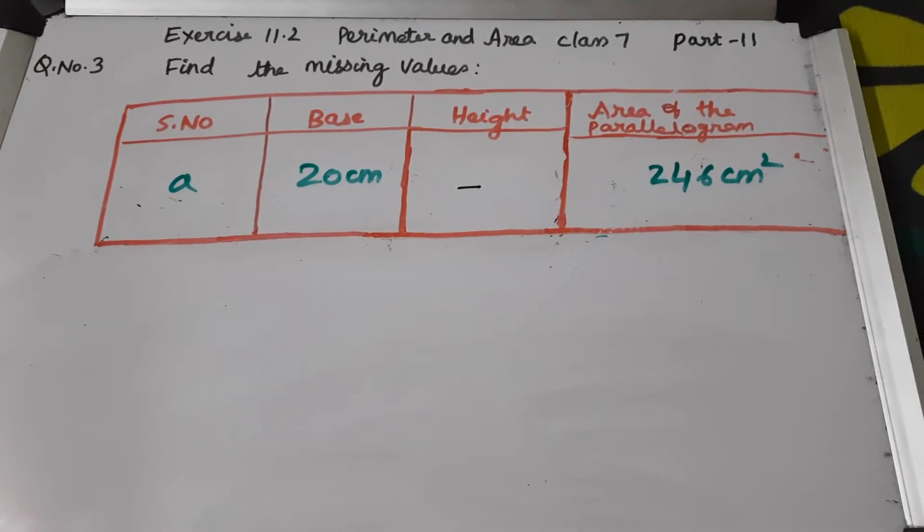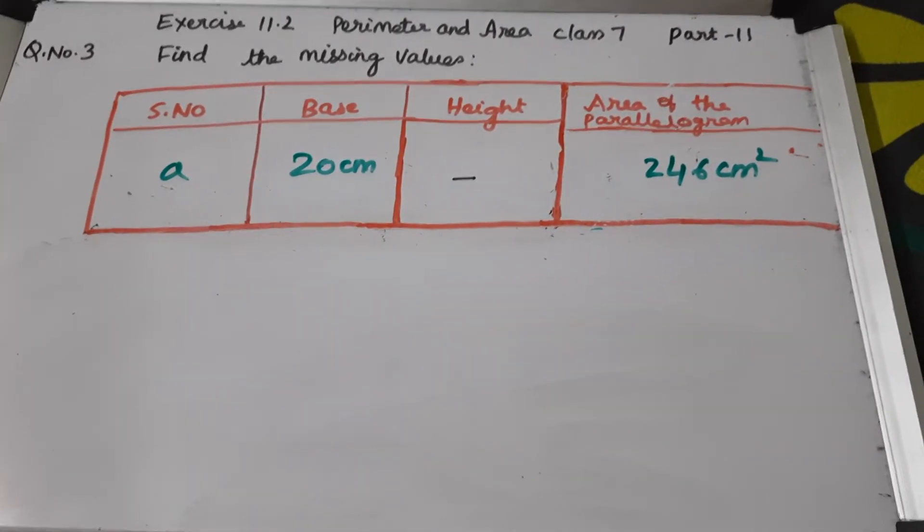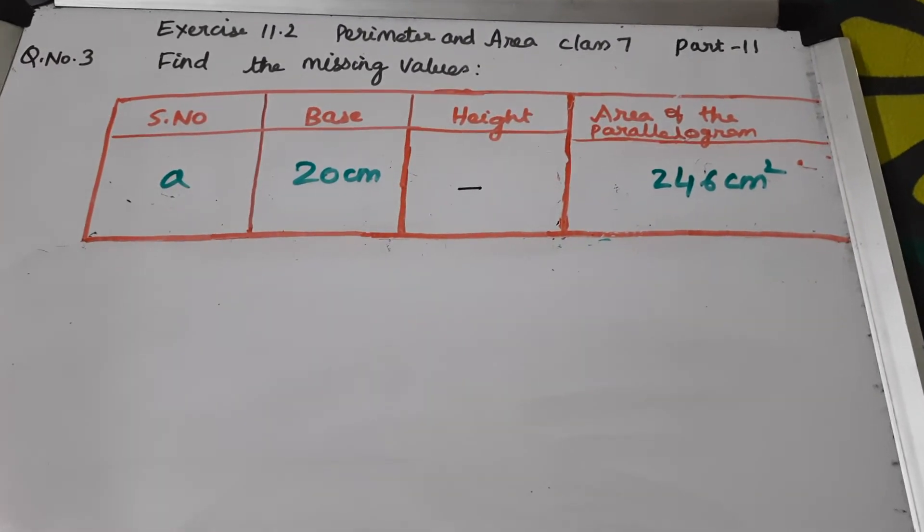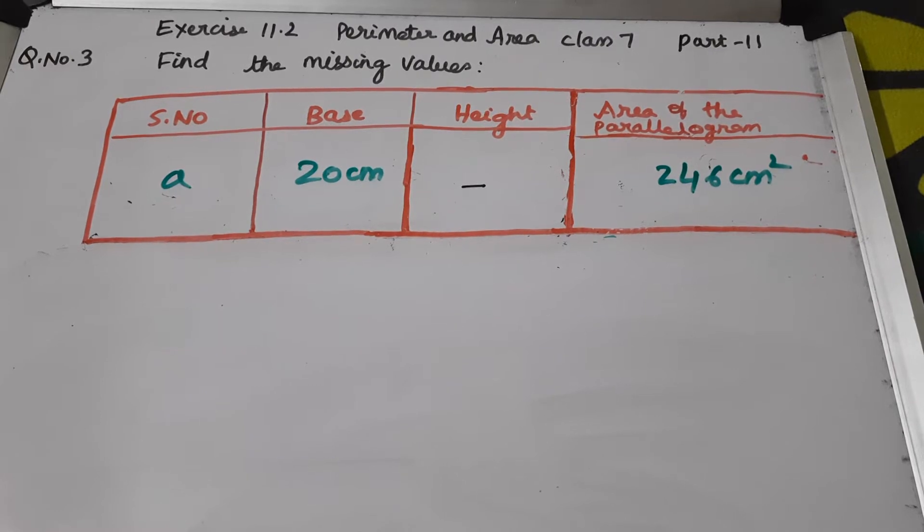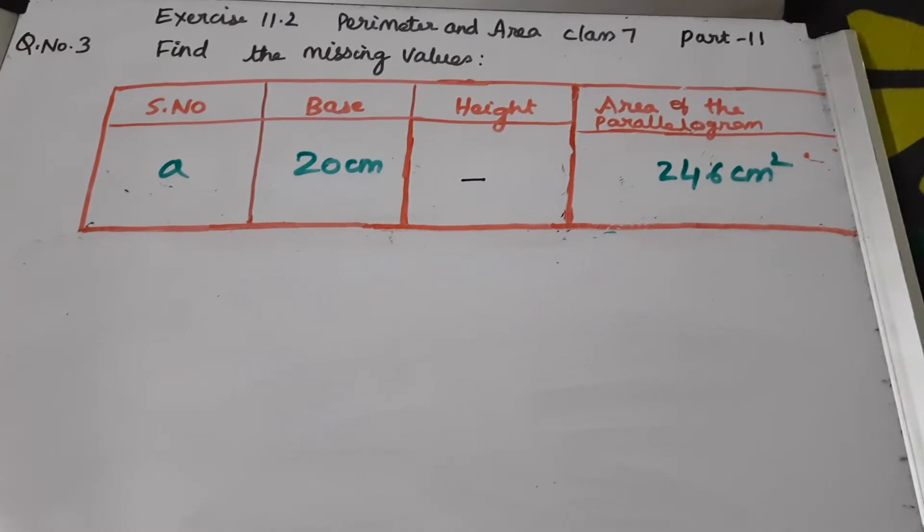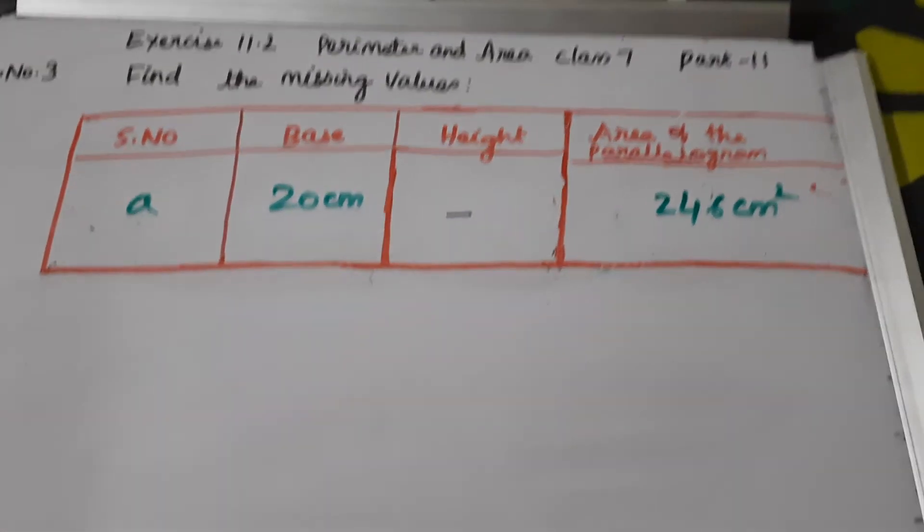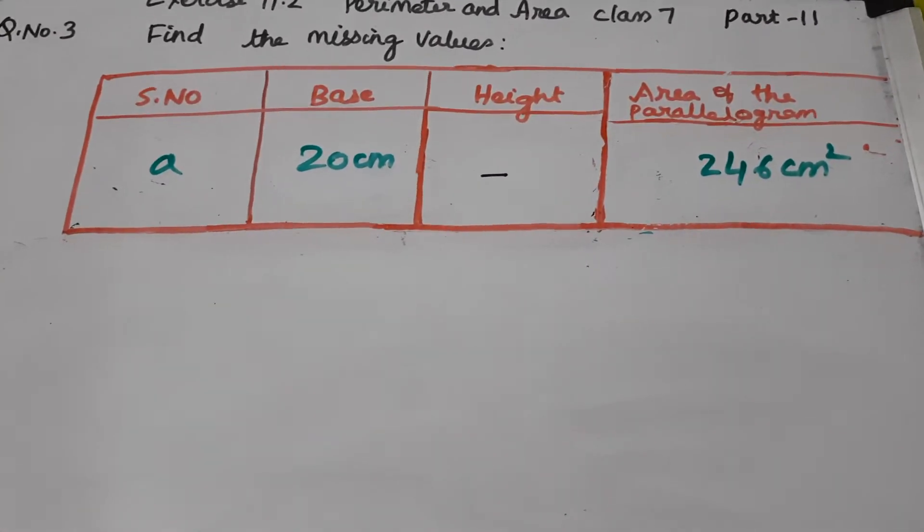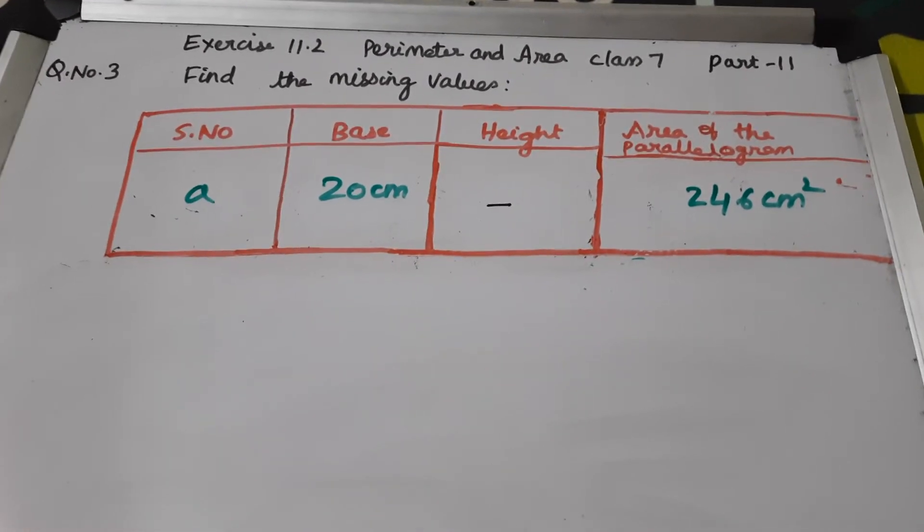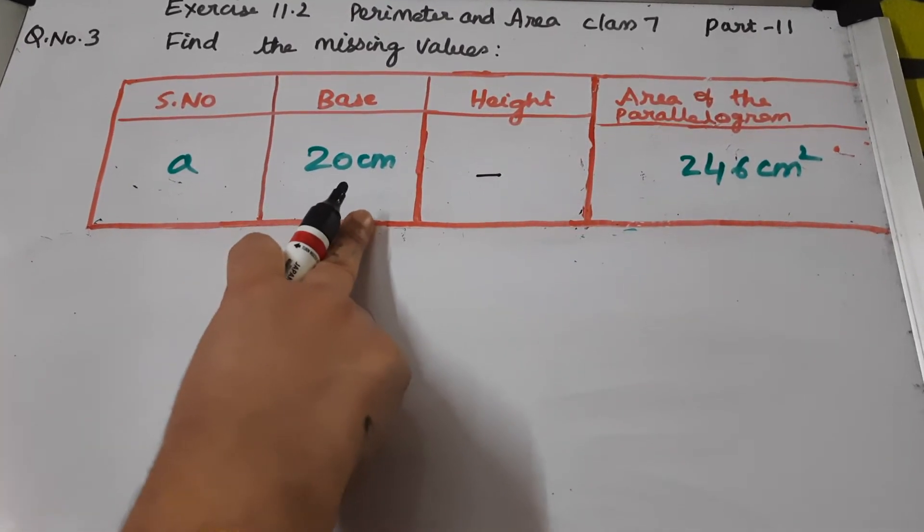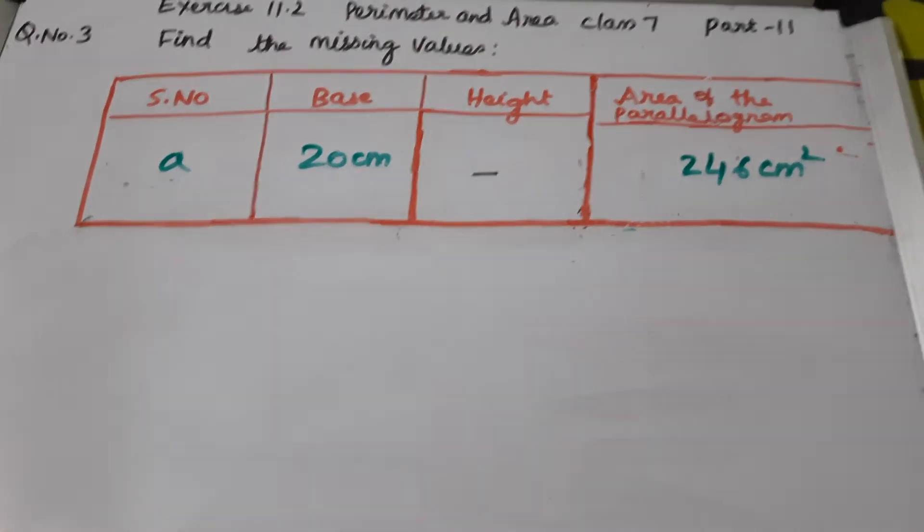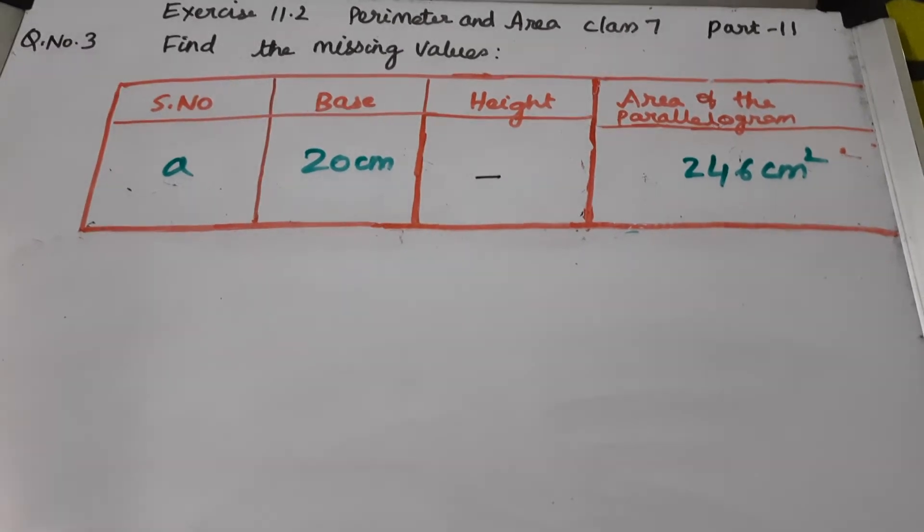Friends, welcome to Super Sunita channel. Today we are going to discuss question number 3 in Exercise 11.2, perimeter and area chapter for Class 7. Here in question number 3, they have given you a table. In the table some values are given, some we need to find out. Here base of a parallelogram is given as 20 centimeters. Height of a parallelogram is not given. Area of the parallelogram is given as 246 centimeters square.